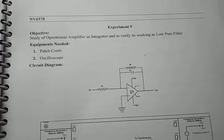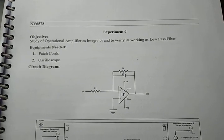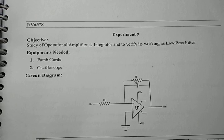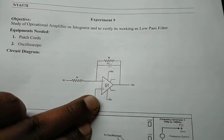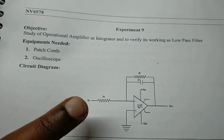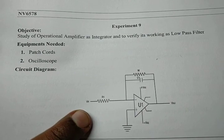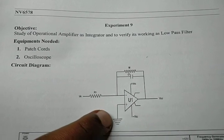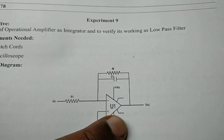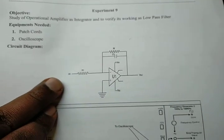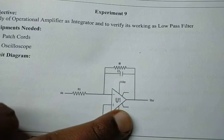Hello everyone, we are here to do the experiment of studying an operational amplifier as an integrator and to verify its working as a low-pass filter. This is our circuit. At the input we have only a resistor, so our DC signal can also pass through the op-amp. Here we have a capacitor connected to the output, so it will block the high frequency signals at the output.